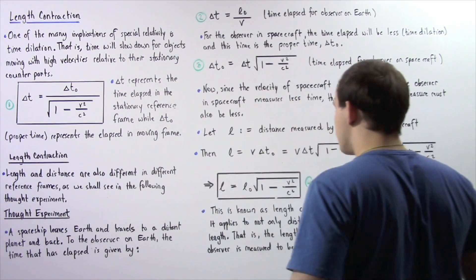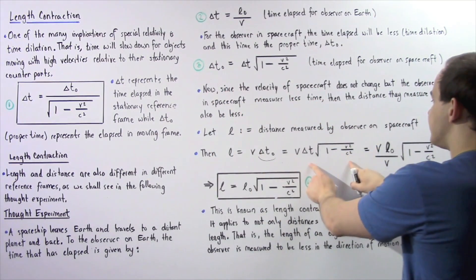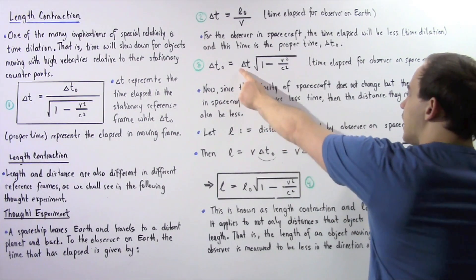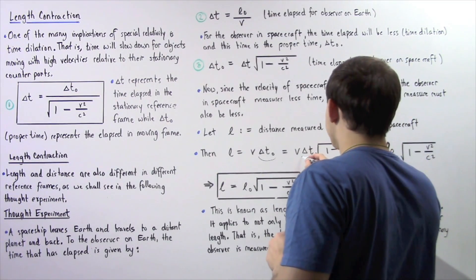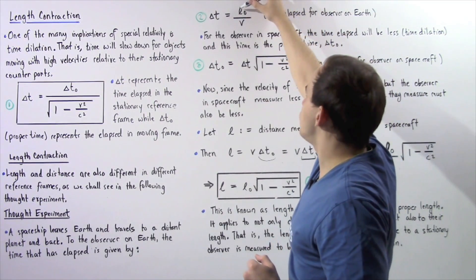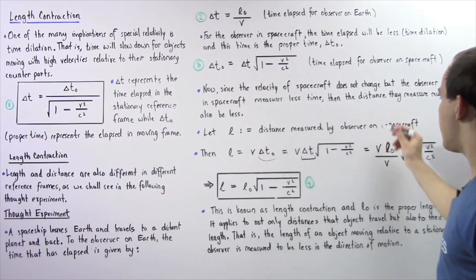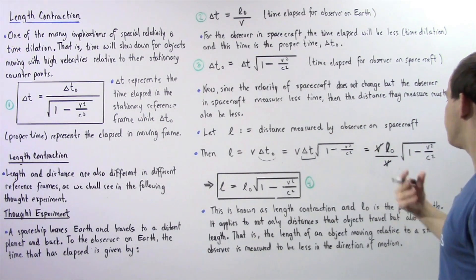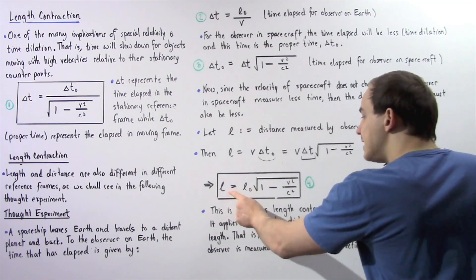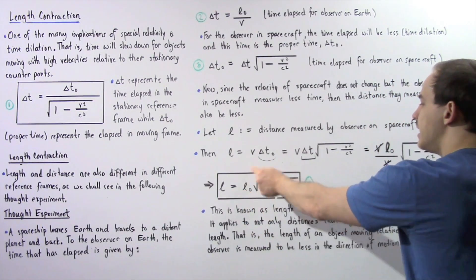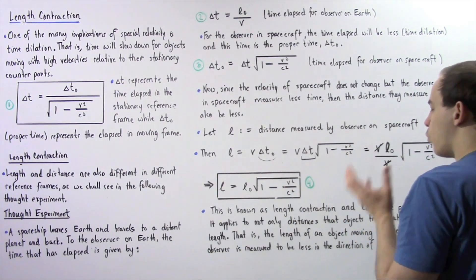Taking equation three, we replace delta t naught with the full expression: v multiplied by delta t multiplied by the square root of one minus v squared over c squared. Then, using equation two, we replace delta t with L naught divided by v. The v terms on the top and bottom cancel, giving us equation four: L equals L naught multiplied by the square root of one minus v squared divided by c squared.